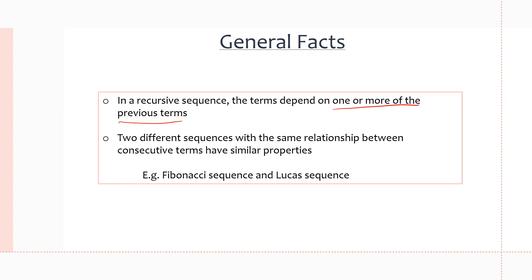The next fact is that two different sequences with the same relationship between consecutive terms have similar properties. So for example, if two arithmetic sequences both have a common difference of 2, they will hold similar properties. And we will see this with the Fibonacci and Lucas sequences.